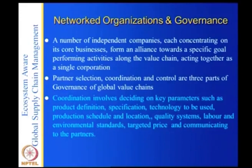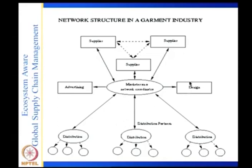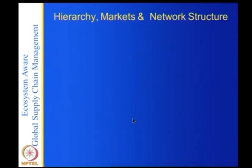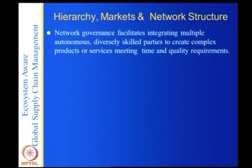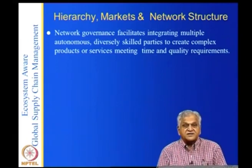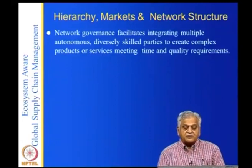In vertically integrated organizations, a design team decides and the CEO approves and gives orders that everyone follows. But in network organizations you have independent organizations, so coordination becomes riskier. There are two kinds of network governance mechanisms that integrate multiple autonomous, diversely skilled parties to create complex products or services meeting time and quality requirements.